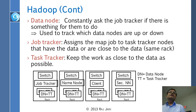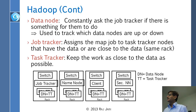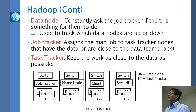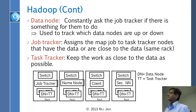Data nodes hold the data and task trackers are the people doing the tasks — generally they are the same node, shown as DN+TT in the diagram. The Job Tracker assigns map jobs, telling each node which key-value pairs to process, so mapping is assigned by the Job Tracker.